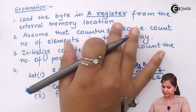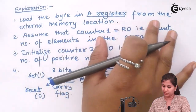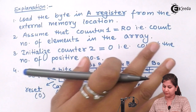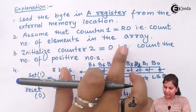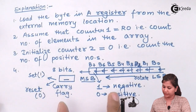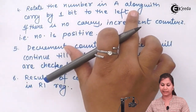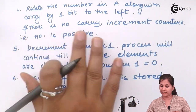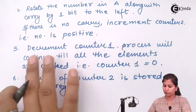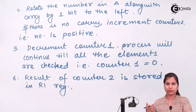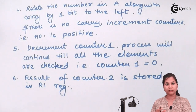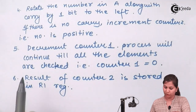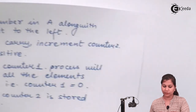To summarize the steps: first, load a byte from external memory into the accumulator. Counter 1 (R0) holds the array length. Initialize counter 2 to 0. Rotate the accumulator with carry to check the MSB. If no carry, increment counter 2. Decrement counter 1 and repeat. When all elements are checked, store the result in register R1.